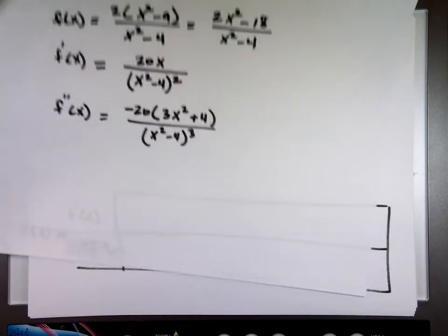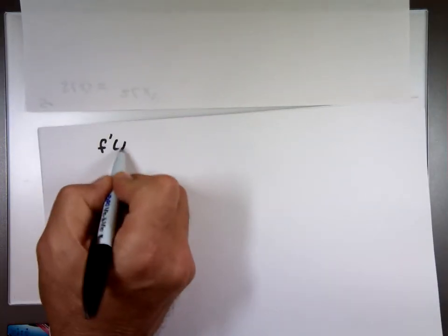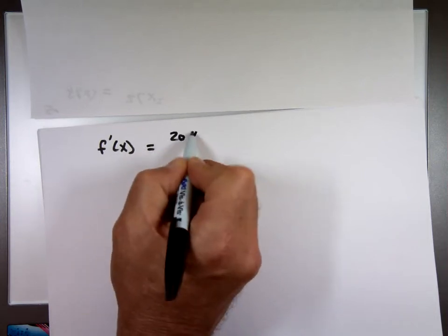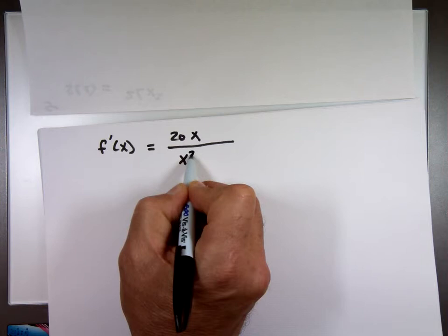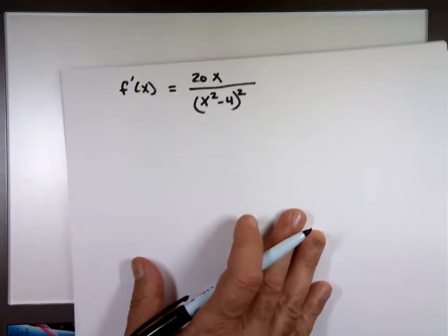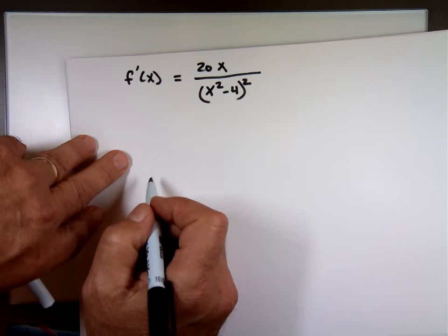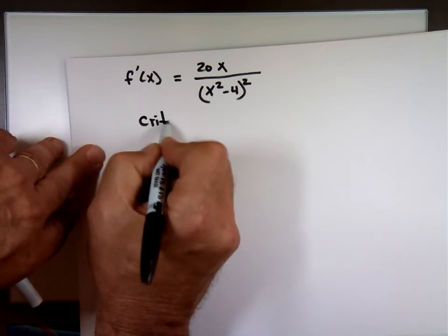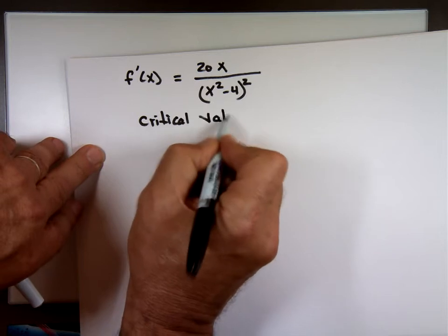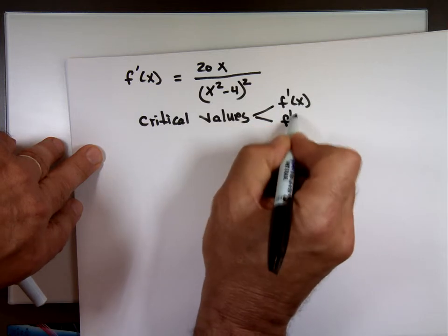Let's look at the first derivative. Let me write it down so I don't have to keep looking back and forth. I want to find everything about the first derivative — where is the derivative undefined, and where is the derivative zero? Those are the critical numbers, also called critical values: where the derivative equals zero, and where the derivative is undefined.